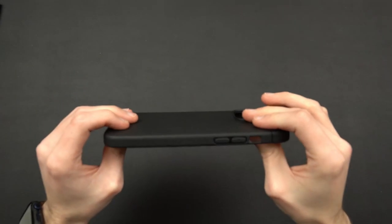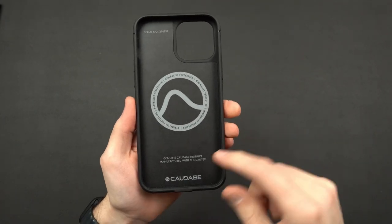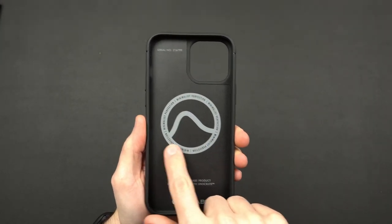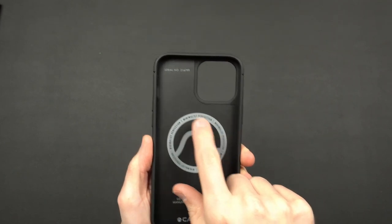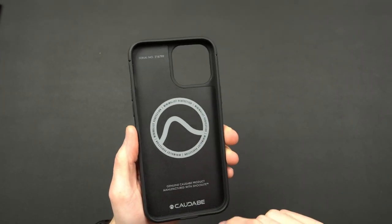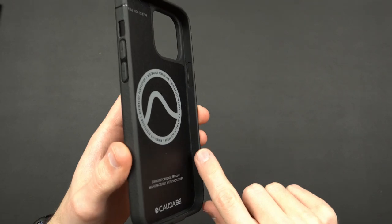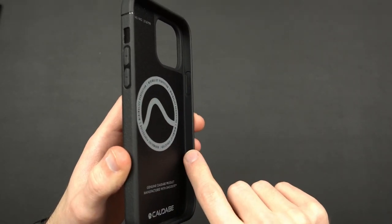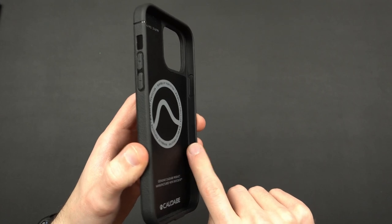Looking at the inside of the case here, you're going to get some Kadabe branding at the bottom. You can see their logo here and that is actually the MagSafe magnets, serial number, and then just a little bit more branding. You're not going to get any type of pillow type things here, cushions for the phone when it drops, but 6.6 feet of drop protection should do it for you.